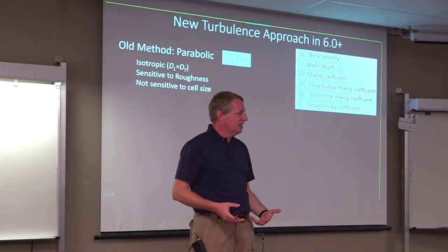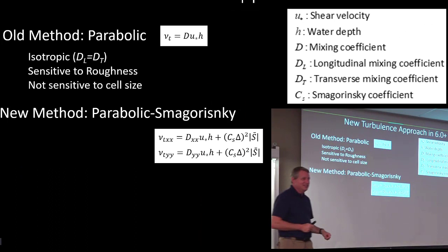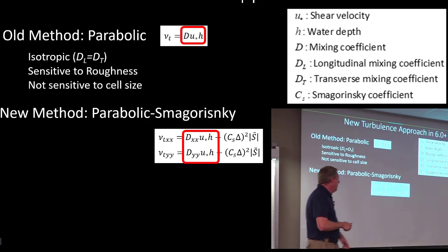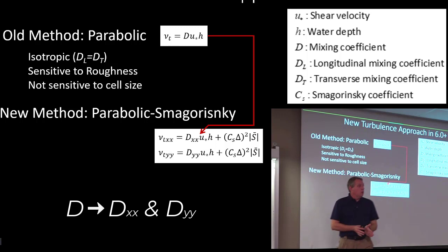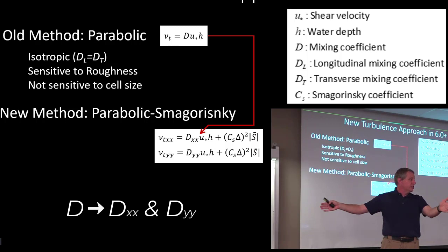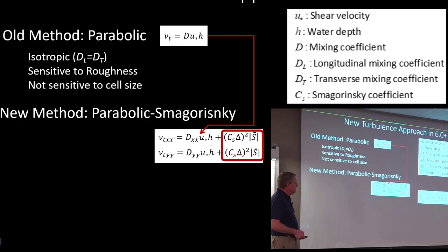What Alex added is what we call the parabolic Smagorinsky method. The reason it's parabolic Smagorinsky is that, you see that right there? That's the same. We kept the parabolic method. Some models will just do the Smagorinsky, but he added the Smagorinsky to it. But what's the first thing you notice about this? He took the opportunity to make it anisotropic. So now we have a longitudinal and a transverse mixing, and they have separate coefficients, and so you can define them separately.